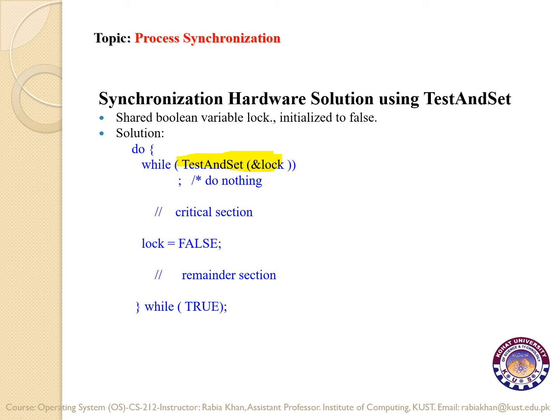If the hardware is available, a lock is set on it by the operating system on behalf of the process. The lock is set because if any other process tries to access the same hardware during that time, it would find it under use or unavailable. After utilizing the hardware, the process releases the lock so that other processes can see its status as available. One process at a time will use the hardware.